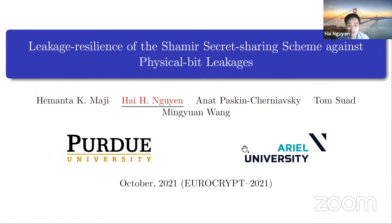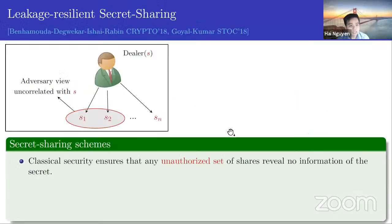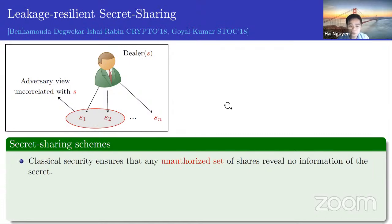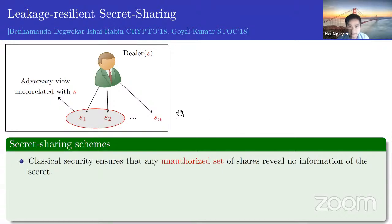Starting with leakage-resilient secret sharing: in a classical setting, a dealer takes a secret S, samples N random secret shares, and security guarantees that any unauthorized set of shares gives no information about the secret. The question raised is: what if an adversary leaks some information from every share — for example, one bit from every secret share Si?